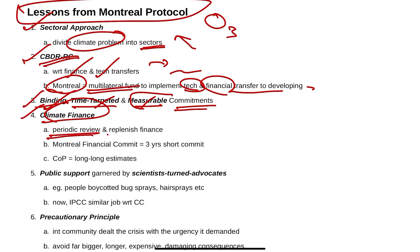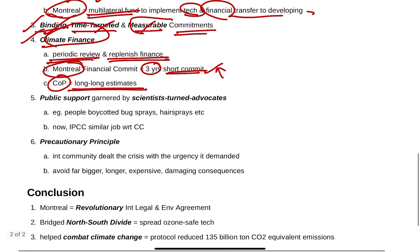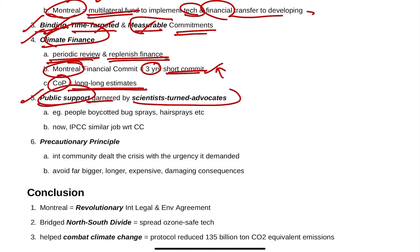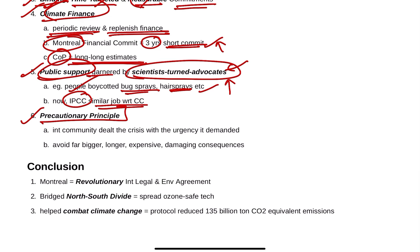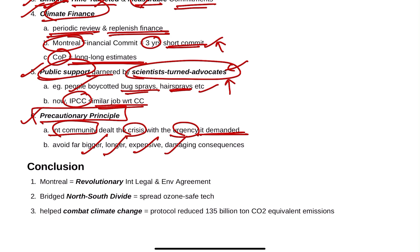Climate finance must have periodic review and be replenished. From Montreal we can learn it had three-year short commitment periods with review later, whereas climate change uses very long estimates. Public support was mobilized by scientists and advocates — people boycotted bug sprays and hairsprays because of publicity from advocates — and now the IPCC is trying to play a similar role. The precautionary principle must be followed; Montreal showed that the international community dealt with the crisis with urgency, thereby avoiding far bigger, longer, more expensive, and more damaging consequences.